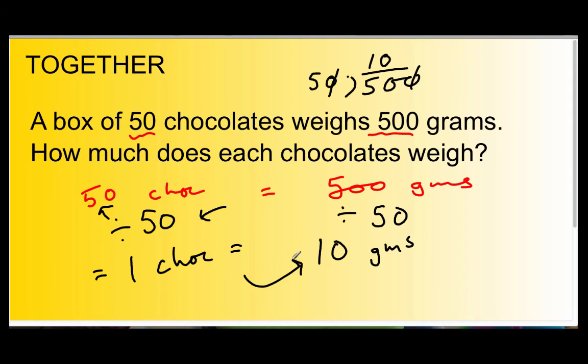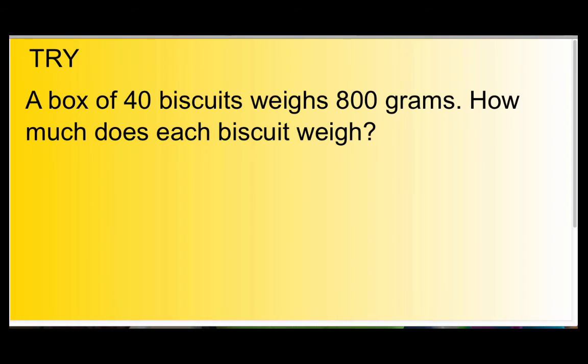You're doing one all by yourself. Here we are, guys. Welcome to the Try Phase. A box of 40 biscuits weighs 800 grams. How much does each biscuit weigh? You're doing it by yourself. Pause me and have a go.